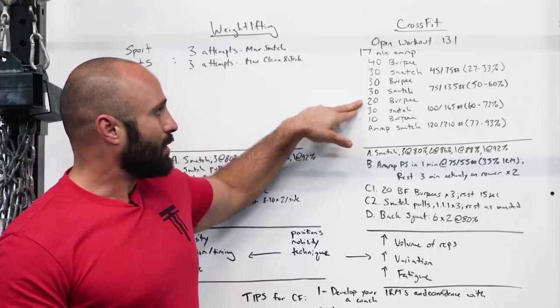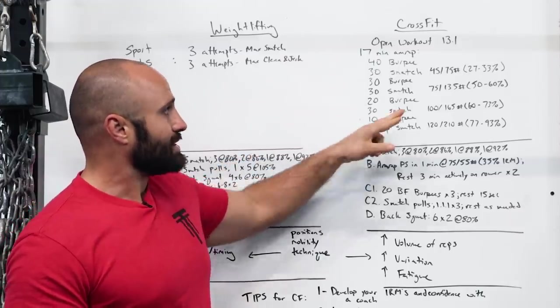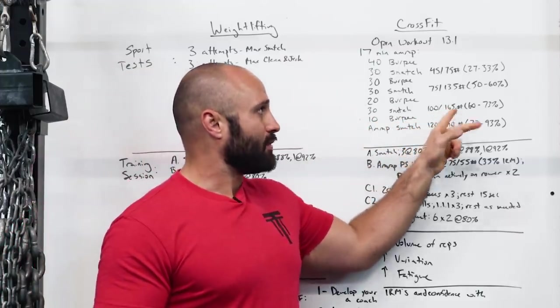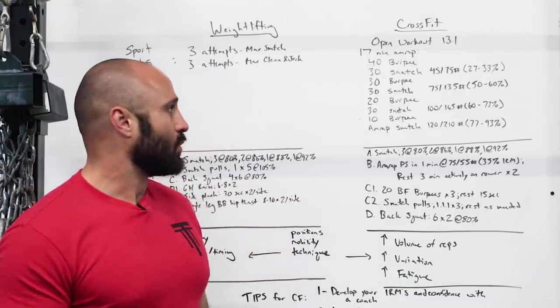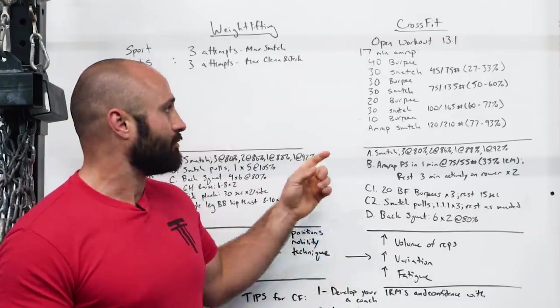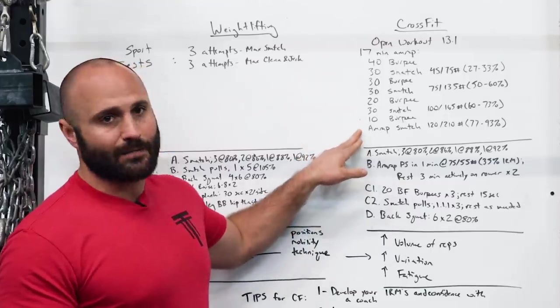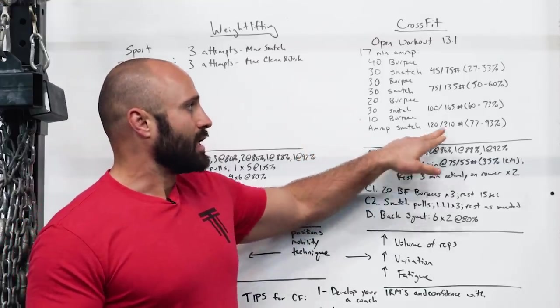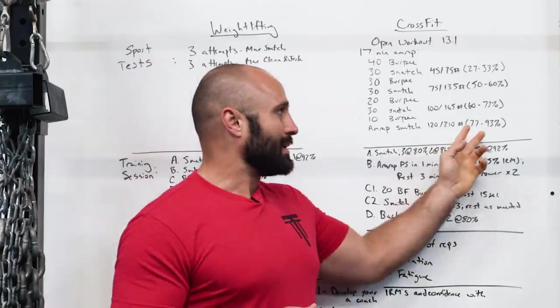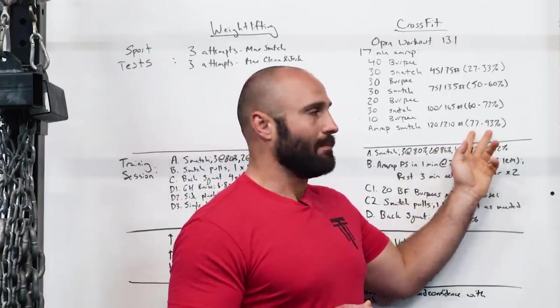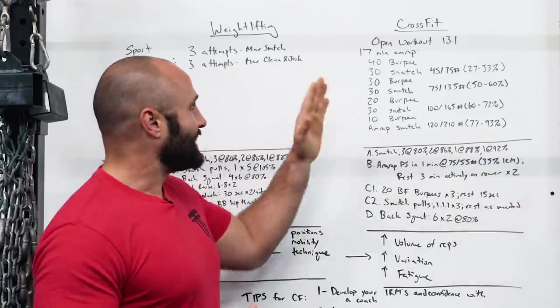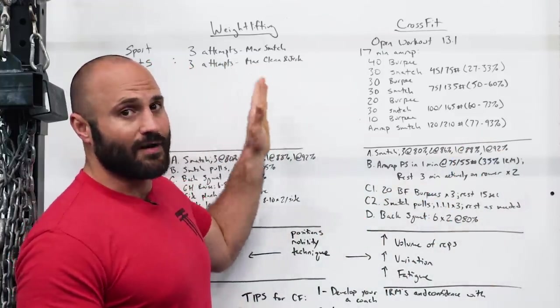Then 20 burpees, then 30 snatches at 100 or 165 for the males, which is 60 to 73% of the one rep max. Then 10 burpees, then AMRAP snatches at 120 or 210, which becomes a wider range with 77 to 93% of a one rep max. You can see the testing demands are very, very different.